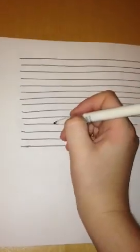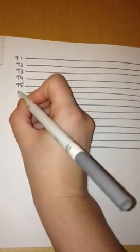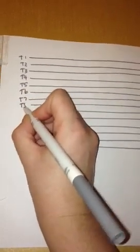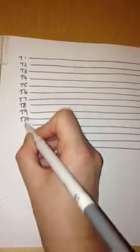So then step two, after you've drawn your 14 lines, you label. Okay, so T1, T2, T3, T4, T5, T6, T7, T9, T10, T11, T12, L1, and L2. So T1 through L2. Okay, that's the second step.